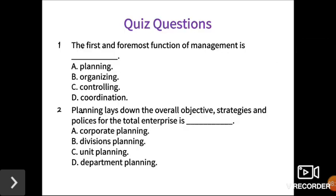Here are some quiz questions for listeners. First: the first and foremost function of management is — the options are planning, organizing, controlling, and coordinating. Second question: planning lays down the overall objectives, strategies, and policies for the total enterprise. You have to find out whether this refers to corporate planning, divisional planning, unit planning, or departmental planning.